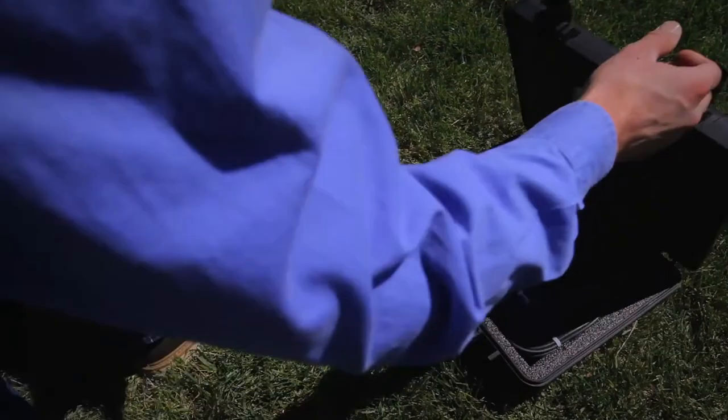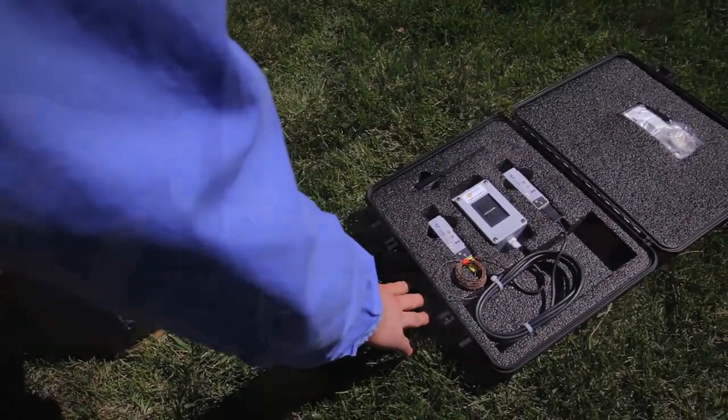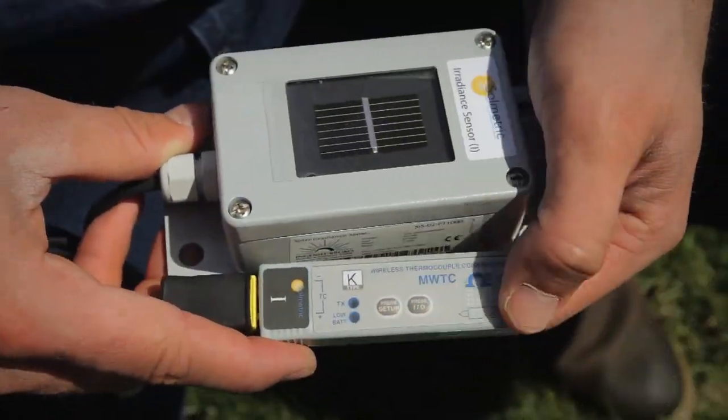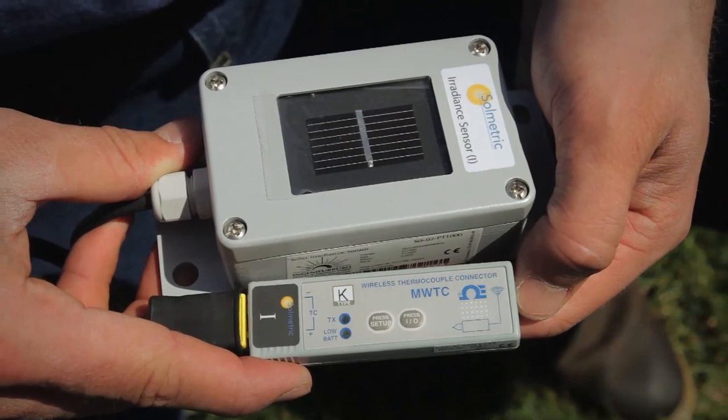Irradiance and temperature are normally measured to ensure accurate model calculations. These values are constantly changing and irradiance in particular can change very rapidly.